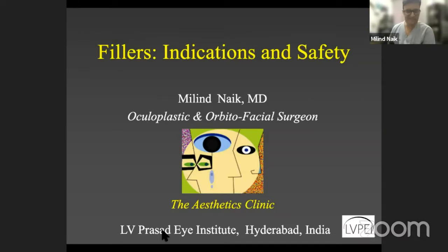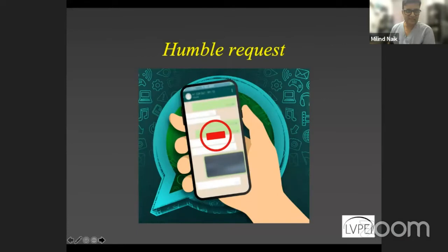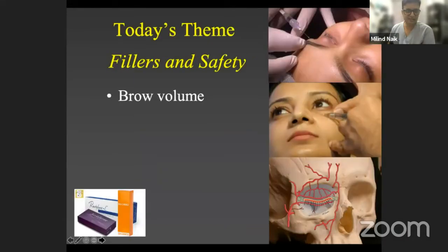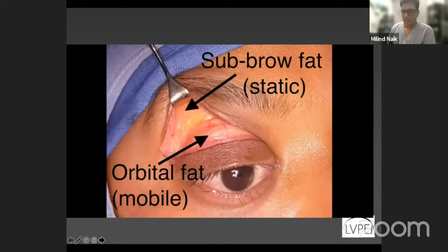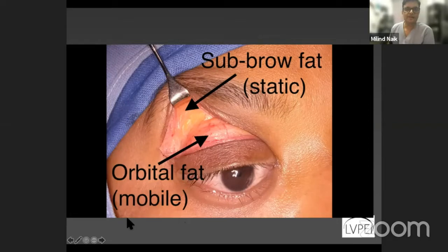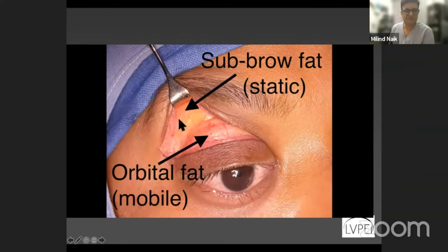My topic is filler indications and safety. I'm going to touch upon brow volume, then the tear trough, and a word on safety. Whenever we talk about brow volume, someone who is not into it can get confused as to which volume we are talking about. This is an intraoperative photograph showing the orbital fat, which is limited by the orbital rim. Beyond the rim you have the sub-brow fat, and this is the fat we are talking about in order to volumize when we speak of volume within the brow region.